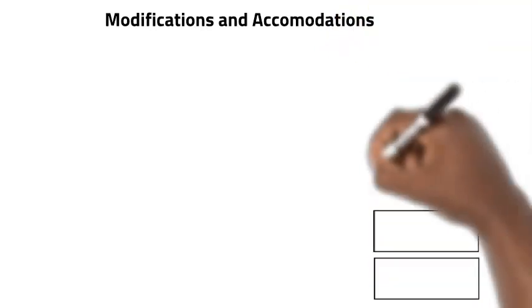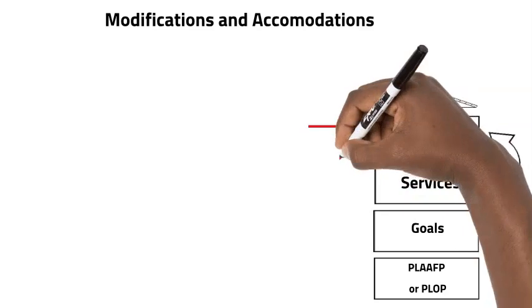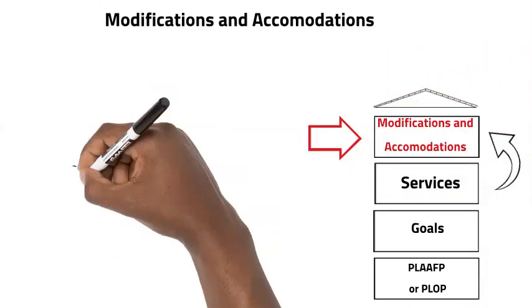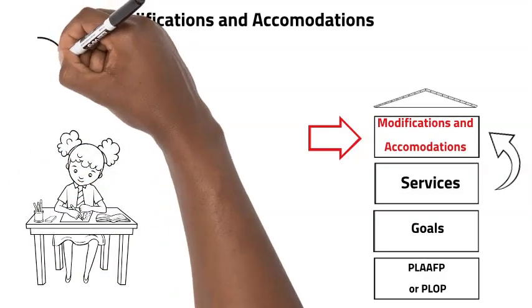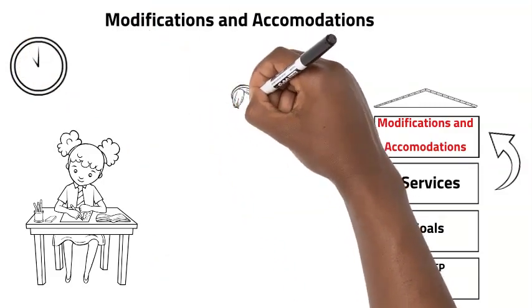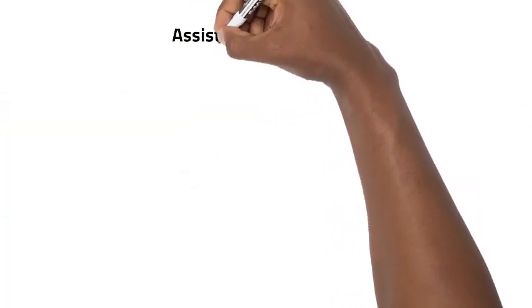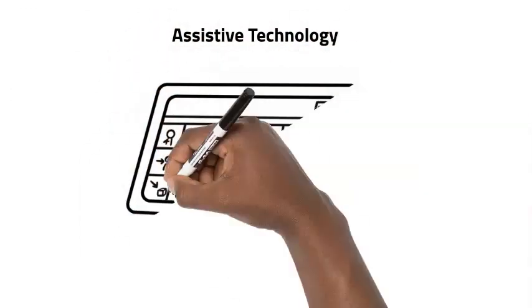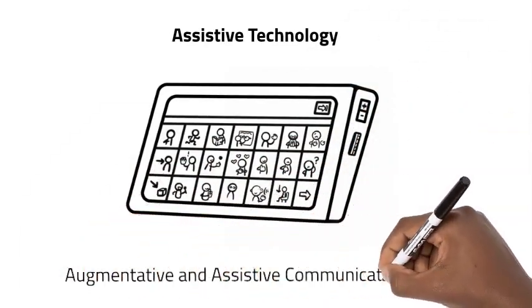Modifications and accommodations. The IEP will also include a section on modifications, or changes, and accommodations, or special supports that your child might need. A modification might be something like allowing extra time for a test. An accommodation might be something like access to headphones during lunch hour. It will also include information about whether your child has access to any assistive technology, such as an augmentative and assistive communication device, or AAC.